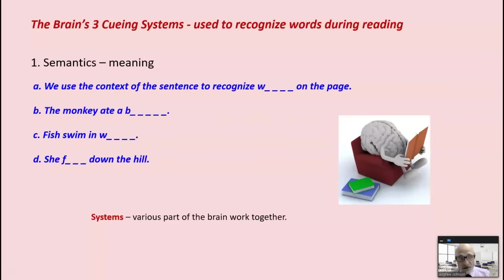Now, the three cueing systems are used to recognize words. That means you see a word in print, it's in your lexicon, and you recognize it. We use semantics, which is meaning or the context of the sentence. This is the most efficient way to recognize words. The monkey ate a ba. Most of us know it's banana because we're using context quickly and easily.